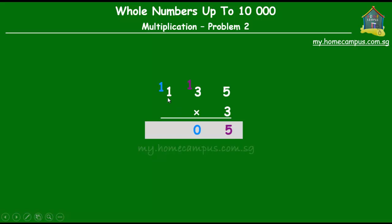The third step is to multiply the hundreds by 3. We have 1 hundred; we multiply by 3 and get 3 hundreds. To that we add the 1 carried over, giving us 4. So 3 plus 1 is 4, and we write that down. The product of 135 and 3 is 405.